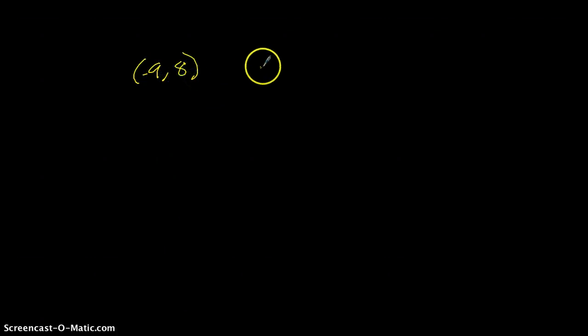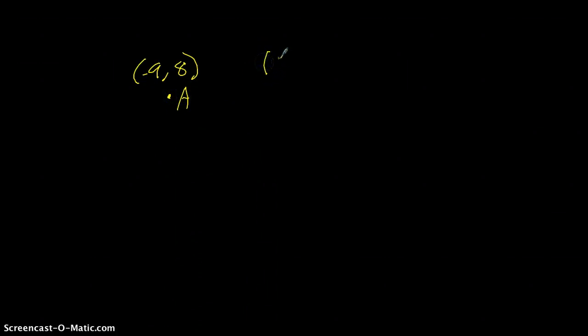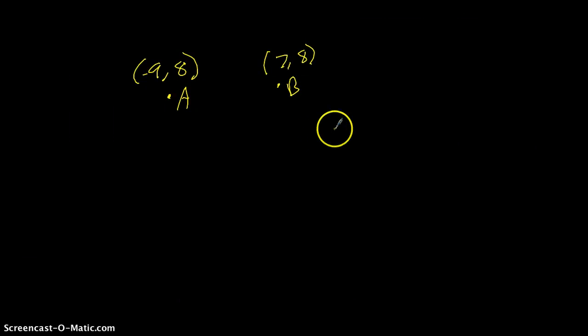Let's say we had coordinates negative 9 and 8 for point A, and coordinates 7 and 8 for point B. We have to figure out what is the length of line segment AB.